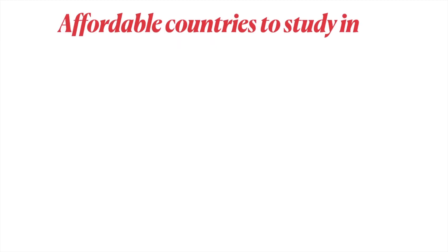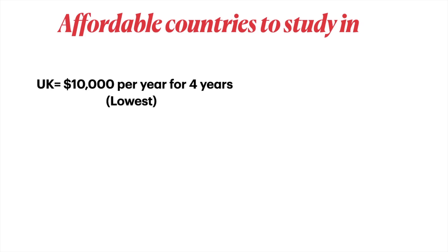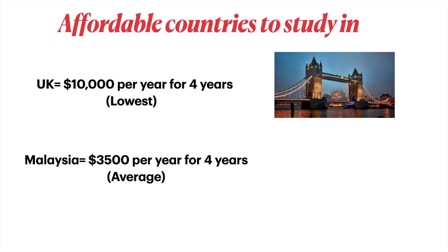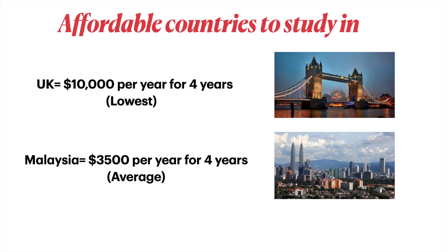Affordable countries to study in include the UK, which is ten thousand dollars per year for four years — that's the lowest price for a university degree — and Malaysia, which is three thousand five hundred dollars per year for four years, which is the average price in the country. These are the only two affordable countries found; most others are ten thousand plus, which is quite expensive.